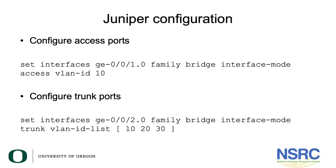For Juniper, inside the configuration you set the bridge family and interface mode. You set it to access for an access port and provide a VLAN ID for that mode. For trunk mode, the interface mode is set to trunk and instead of a single VLAN ID you give a list in square brackets with the different VLANs — in this case 10, 20, and 30. The access port participates in VLAN 10 with untagged frames, which is very similar to what Cisco does.